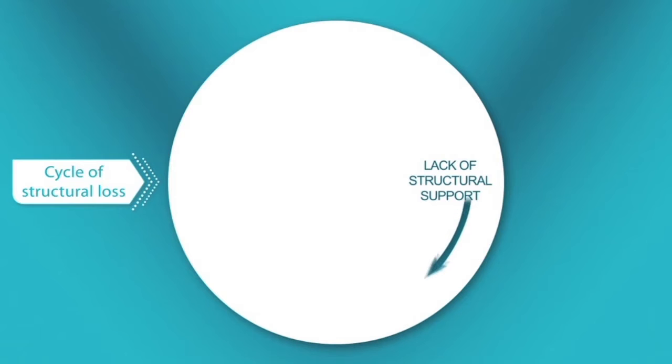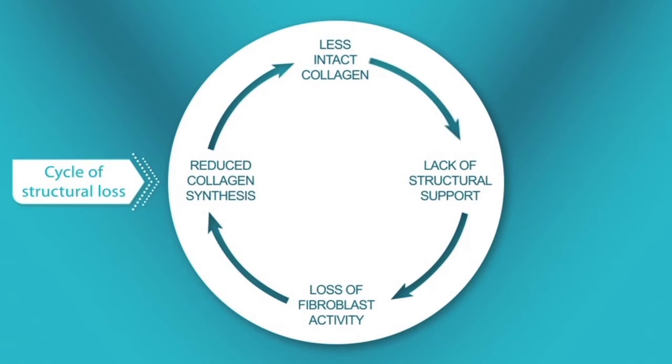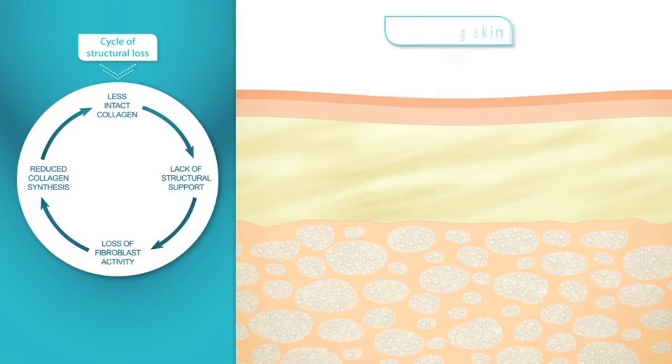Lack of structural support decreases the fibroblast activity, leading to reduced collagen synthesis and more collagen debris. The visible result: sagging skin and wrinkle formation.